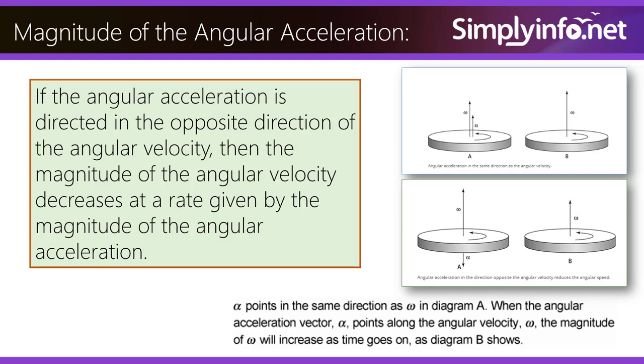alpha points in the same direction as omega in diagram A. When the angular acceleration vector alpha points along with the angular velocity, the magnitude of omega will increase as time goes on, as diagram B shows.